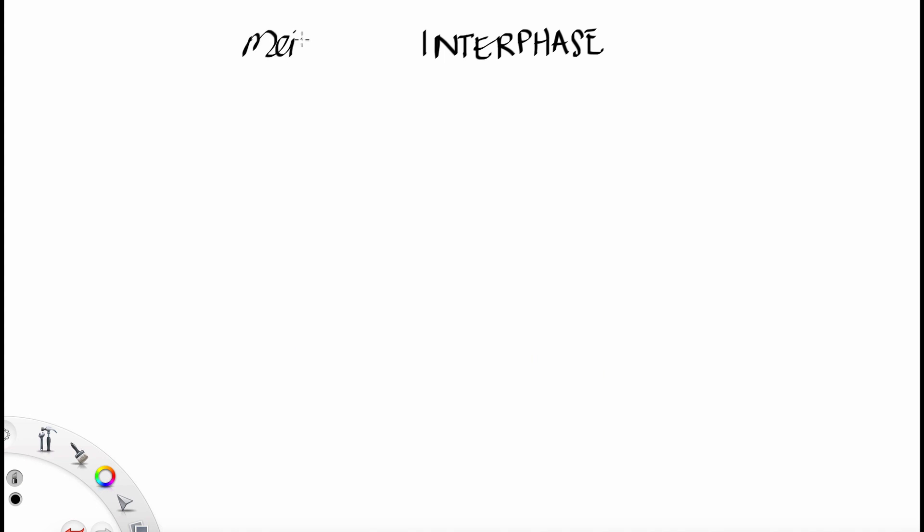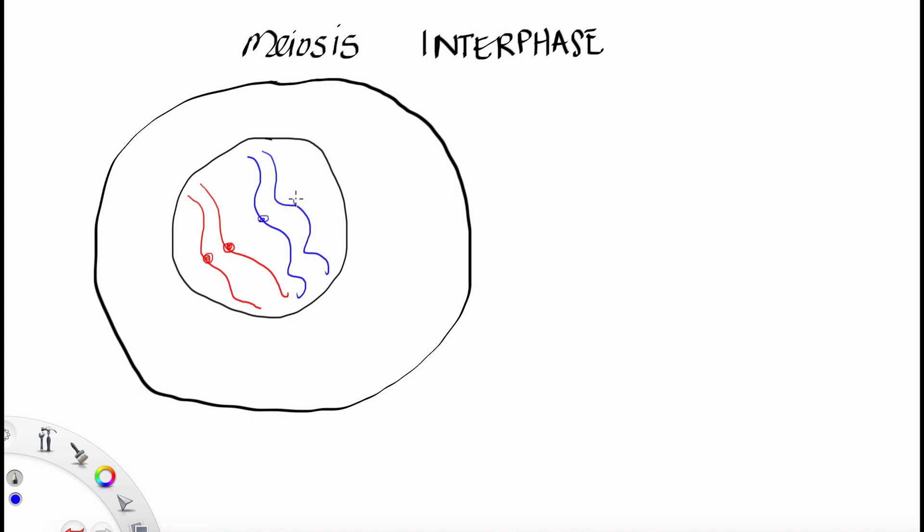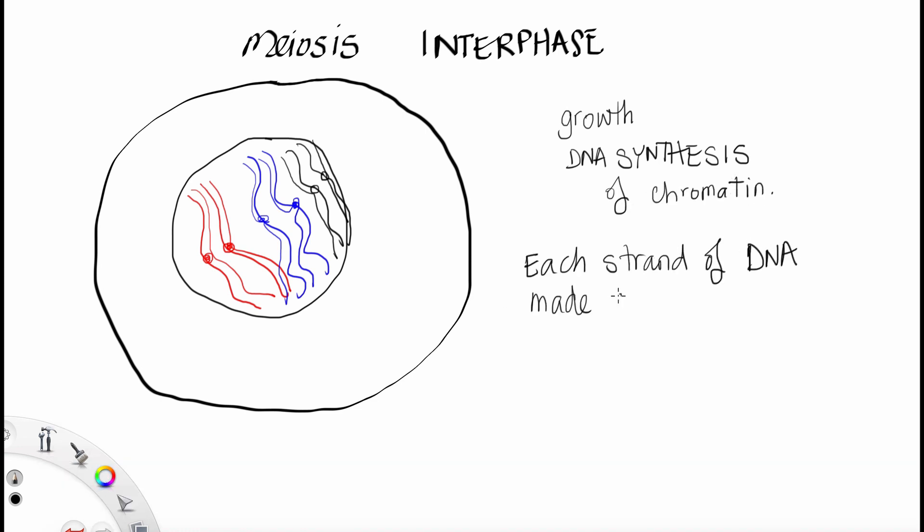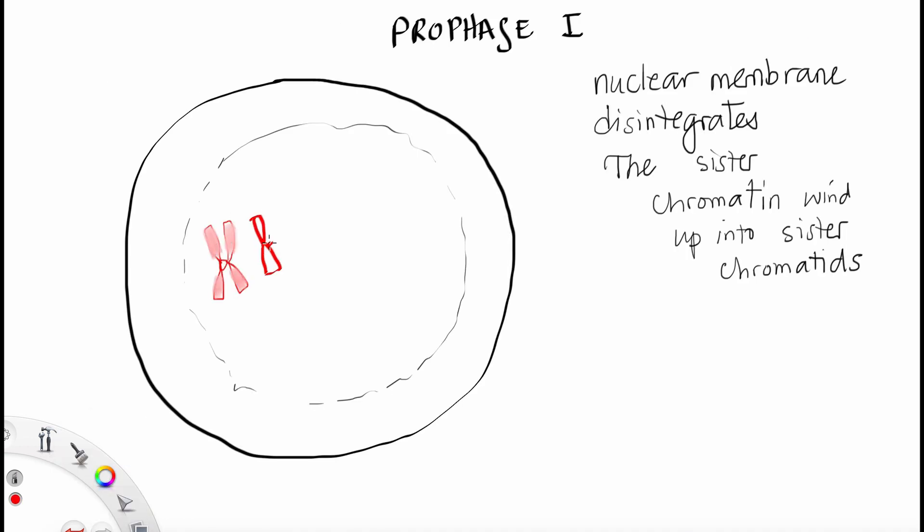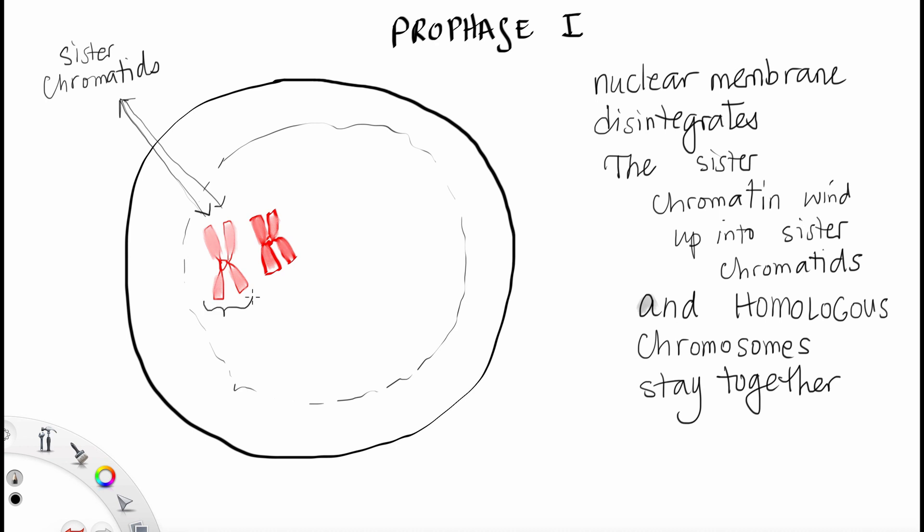So the first stage of meiosis now is still interphase. During interphase we have 6 chromatin. We start out with the growth phase, and then the DNA synthesis phase, where the chromatin doubles into sister chromatin. So each strand of DNA now made a sister. Now we've got 12 pieces. So here we are in prophase 1, the nuclear membrane disintegrates, and the sister chromatin winds up into chromatids. And we've got homologous chromosomes which stay together.